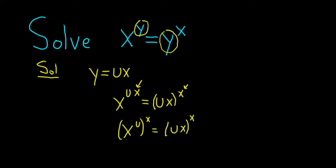And what this does is it allows us to get rid of the x's because now we can raise both sides to the 1 over x. So this is 1 over x, and then over here, this is also 1 over x. So these cancel. So you get x to the u equals ux because these cancel.